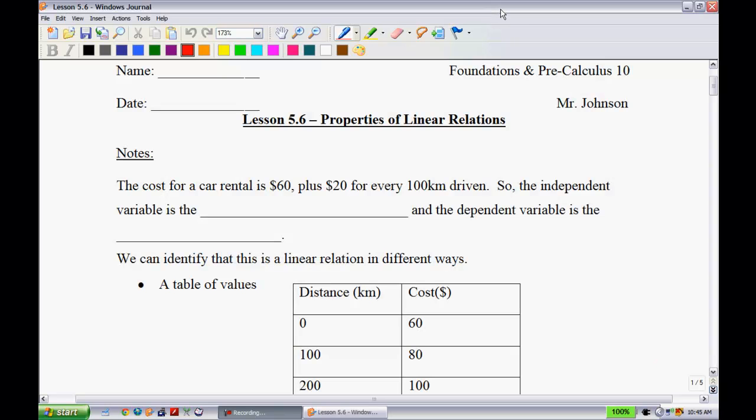Lesson 5.6, Properties of Linear Relations. In this lesson, we're going to be looking specifically at what happens when you have a linear graph. All examples will revolve around that. Let's get started. The cost for a car rental is $60, plus $20 for every 100 kilometers driven. The independent variable then must be the distance driven, and the dependent variable is the cost. How much you pay depends on how far you drive.